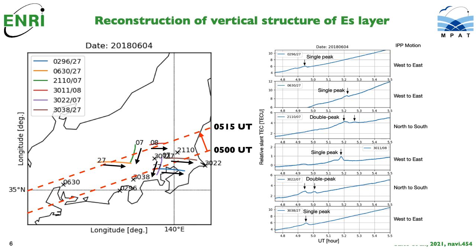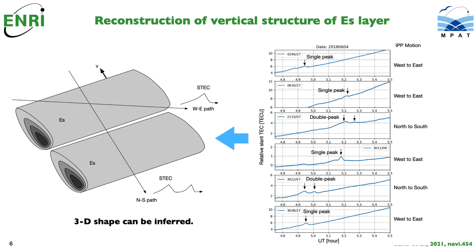By using the ES layer front parameters and 1Hz sample slant TEC variation, we can infer the vertical structures of the ES layer. From TEC variation from six satellite-receiver pairs with large ROTI values, we see that the ES layer appears to have two successive subfronts with sharp gradient at the backside.